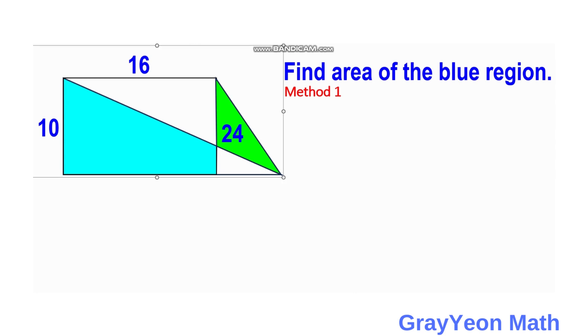For the first method, we are going to label this side as H. This is actually a common base for these two triangles, the white right triangle and the green triangle. And we label this side as A.